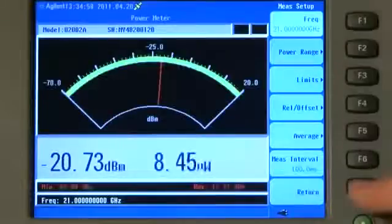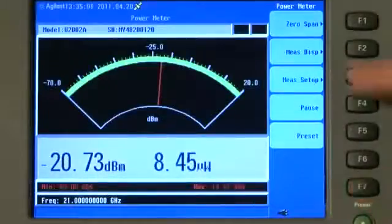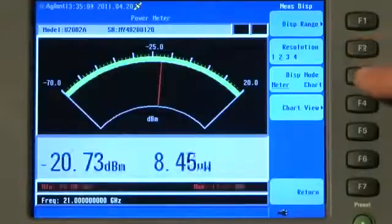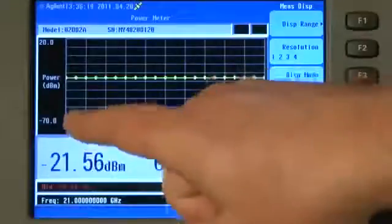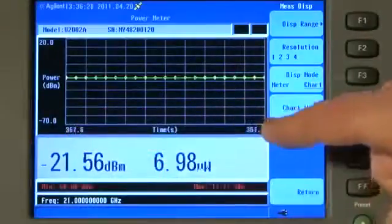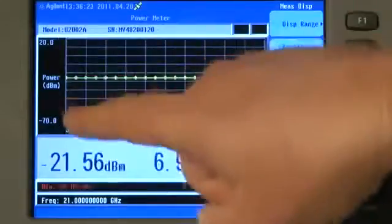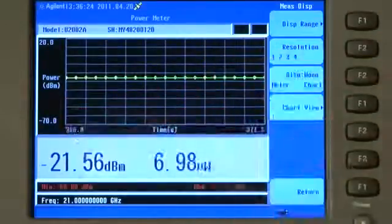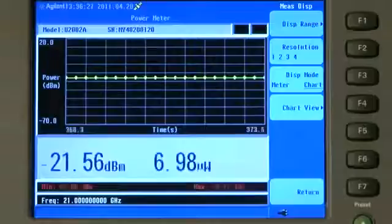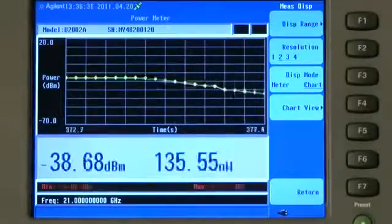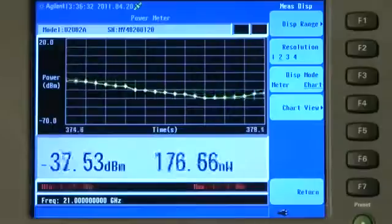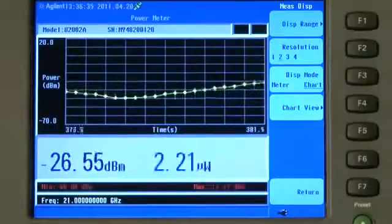But what's even better, if I press Return and press Meas Display, you'll see here that we can change the display mode to a chart recorder. On the chart recorder display, we have time on the x-axis and power in dBm on the y-axis. So if we're trying to track, again, a microwave fading situation, as the level drops down, you can see that we are recording that on the chart recorder display.